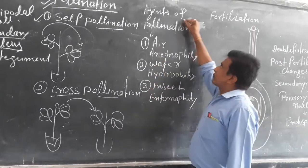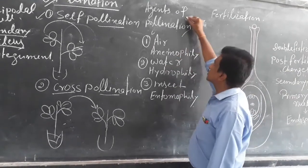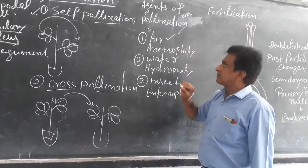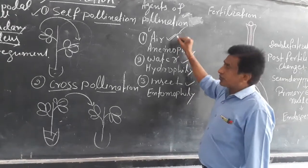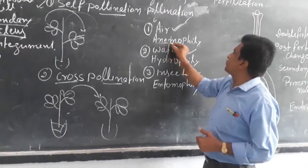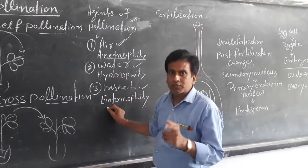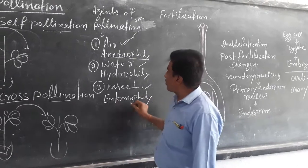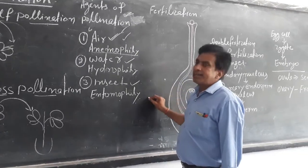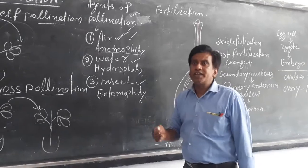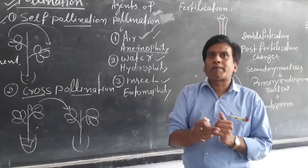Now, agents of pollination — meaning, the agents by which pollination occurs. The first agent is air, the second agent is water, and the third agent is insects. Pollination by air is called anemophily. Pollination by water is called hydrophily. Pollination by insects is called entomophily. These agents help in pollination, meaning they help in the transfer of pollen from anther to stigma.